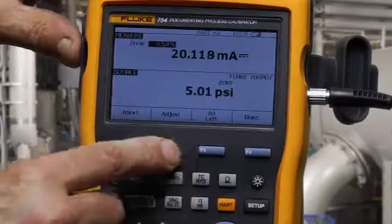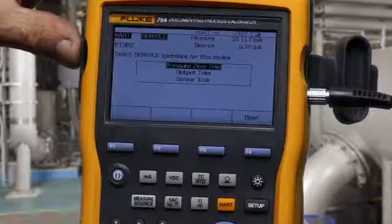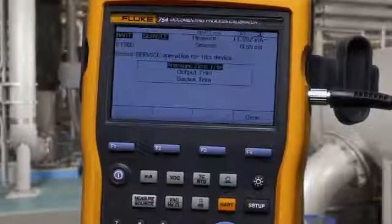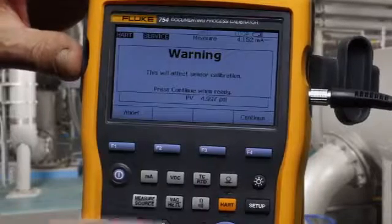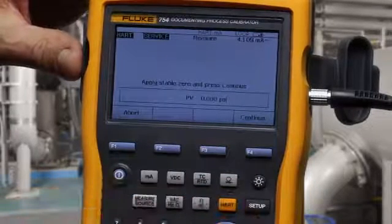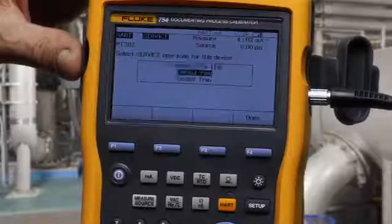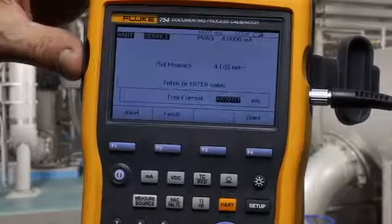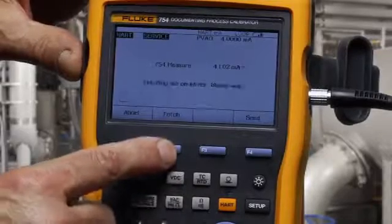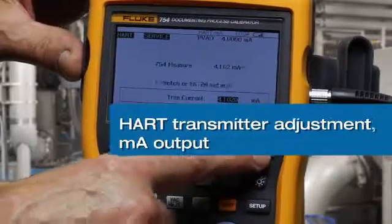Next select adjust. The first form of pressure zero trim. With the pump vented to the atmosphere. And then an output trim, where we trim the milliamp output by fetching a 4 milliamp value as measured and send the trim to adjust.